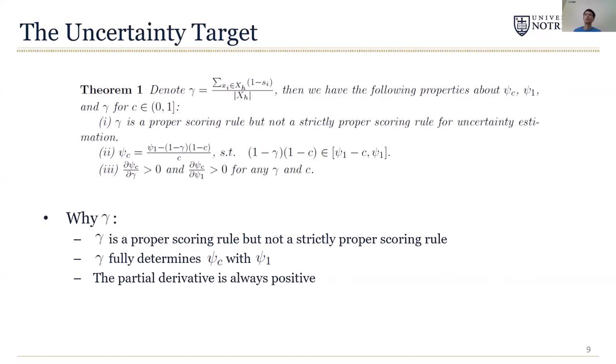Second, the practical target P@c is fully determined by P@1 and γ. And third, we find that the partial derivative of P@c with respect to P@1 and γ are always positive. It means that at any point, in order to improve P@c, we should increase P@1 and γ. So it can correctly help us in setting up an optimization framework.